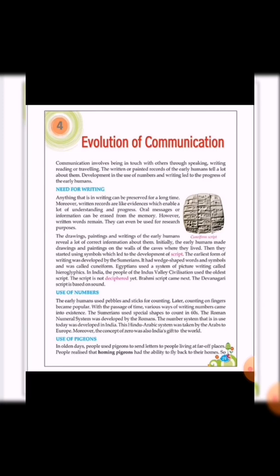Next came the Brahmi script. It is the earliest writing system developed in India after the Indus script. Then came the Devanagari script. It is derived from the Brahmi script. It is used to write many Indian and Nepalese languages such as Hindi, Sanskrit, Marathi, Bhojpuri and Nepali. It is written left to right. Brahmi script is a fully developed and universal script.